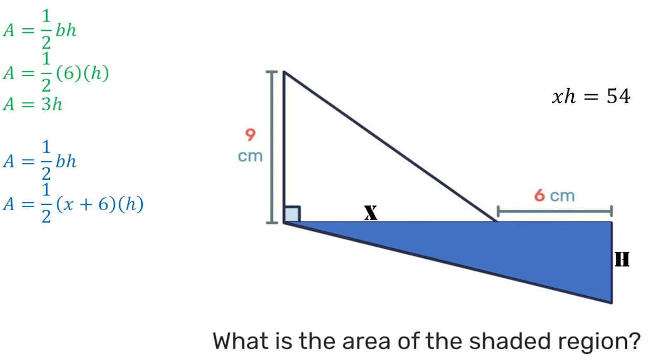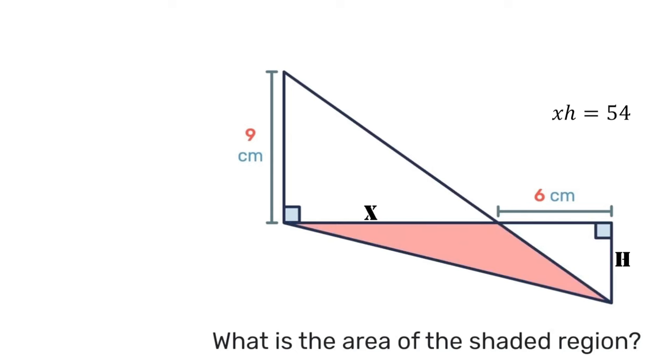So using the distributive law, we'll multiply half times x times h, and we'll multiply half times 6 times h. The half times 6 times h simplifies to 3h.